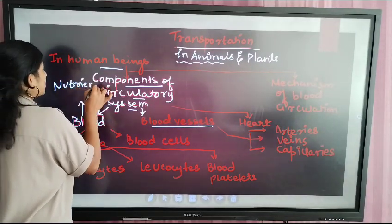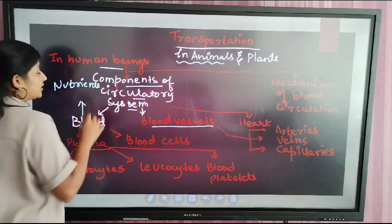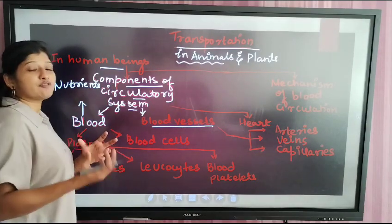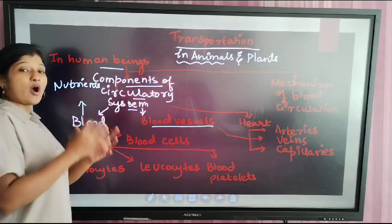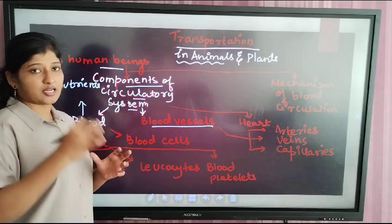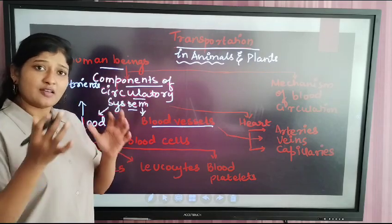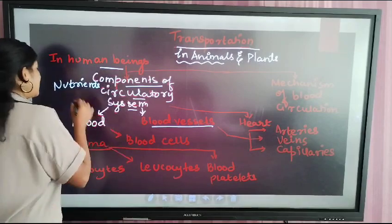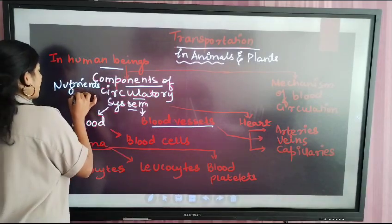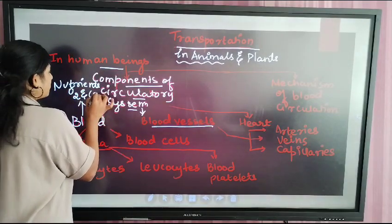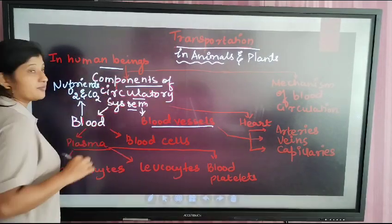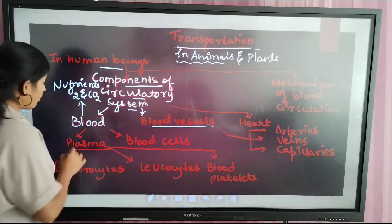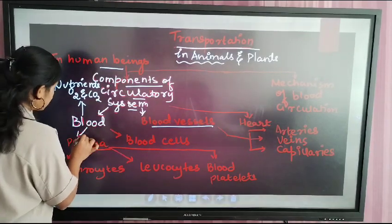Nutrients in the digested food materials include fats, carbohydrates, and proteins. The fluid body here is blood. Blood also carries oxygen and carbon dioxide. So blood is made up of plasma.